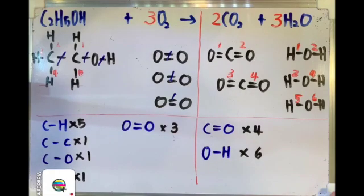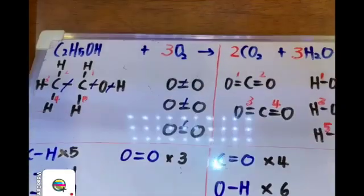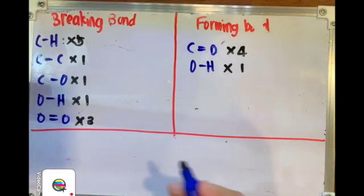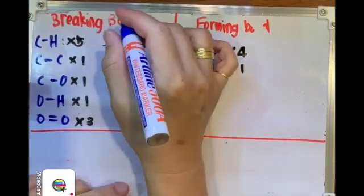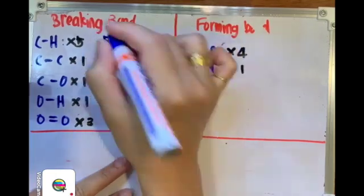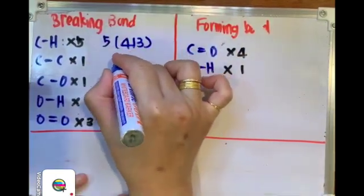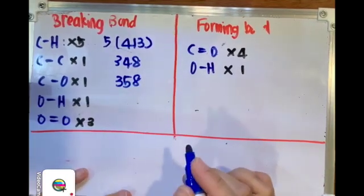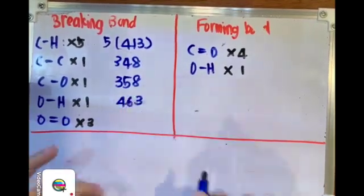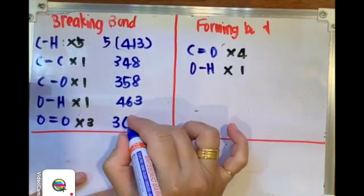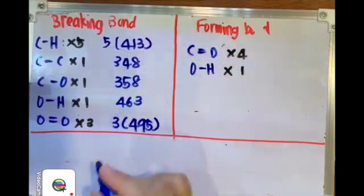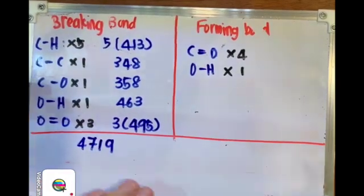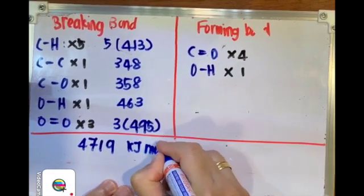Now we move on to the calculation. After identifying each type of chemical bond, it is time to do the substitution. Refer to your bond energy table. C-H will be 413, and we have 5 of them. C-C single bond will be 348. C-O single bond will be 358. O-H bond is 463. O=O double bond is 495, and we have 3 of them. So the total amount of energy needed to break all these chemical bonds is 4,719 kilojoules per mole.